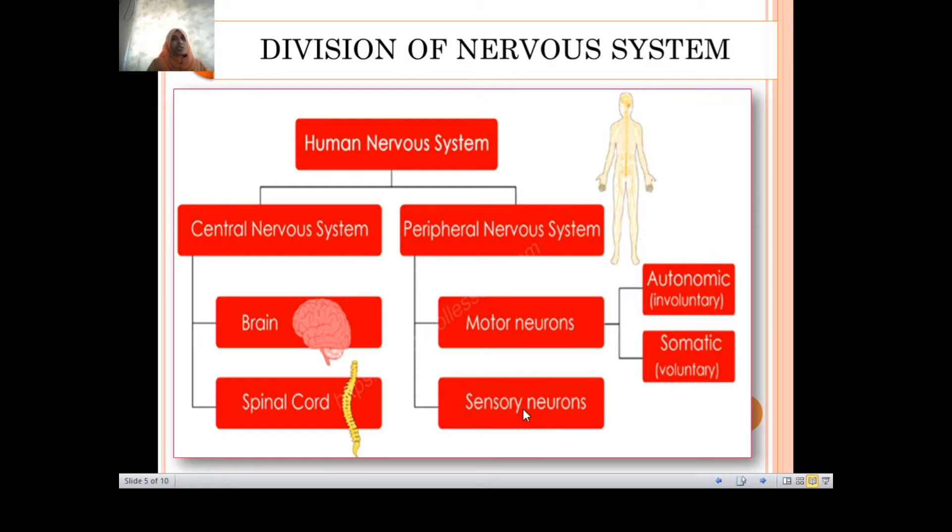Motor neurons means those involved with movement. Sensory neurons can sense any stimuli like if someone is pinching you, that sensation will be transferred in the form of impulses. This motor neuron, if we further classify, can be classified as autonomic nervous system and somatic nervous system.